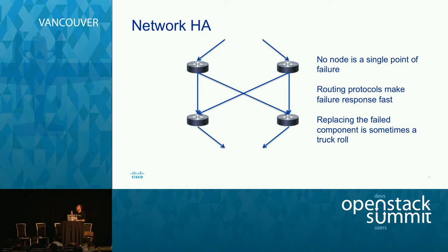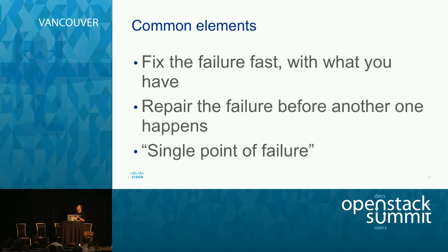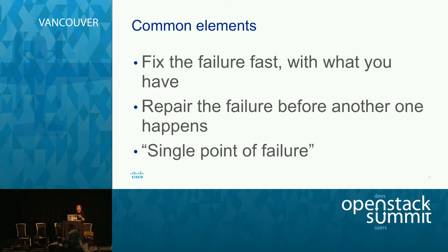Replacing a failed network component usually involves rebooting something or replacing a physical piece of hardware — potentially a truck roll. In summary, there are common elements: fixing the failure fast with whatever's left after it happens; and repairing the failure before another one happens, because we talk about single points of failure — multiple simultaneous failures are incredibly rare if individual failures are uncommon. You need to repair in that window, but it's usually not a very big window.